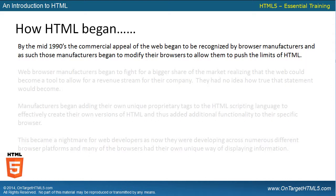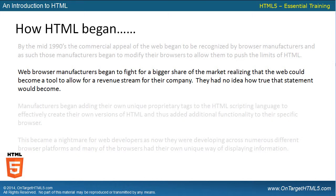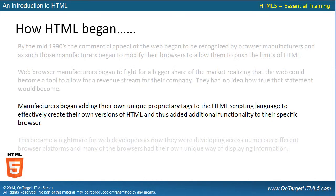By the mid-1990s, the commercial appeal of the web began to be recognized by browser manufacturers, and as such, those manufacturers began to modify their browsers to allow them to push the limits of HTML. Web browser manufacturers began to fight for a bigger share of the market, realizing that the web could become a tool for a revenue stream. Manufacturers began adding their own unique proprietary tags to the HTML scripting language to effectively create their own versions of HTML, and thus added additional functionality to their specific browser.